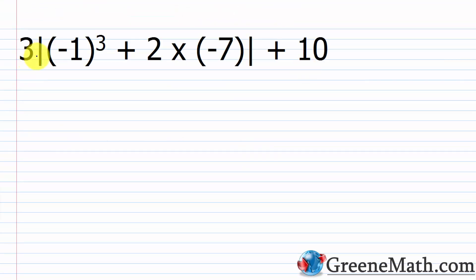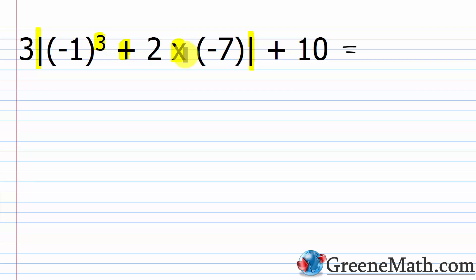For the next problem: 3 × |(-1)³ + 2 × (-7)| + 10. The absolute value bars serve as grouping symbols. Inside them, we look for the highest priority — we have an exponent, addition, and multiplication. The exponent is highest priority. Negative one cubed: the exponent is odd and we have parentheses around the base, so the result is negative. Three factors of negative one gives a negative result — so this is negative one.